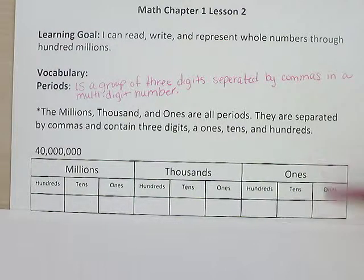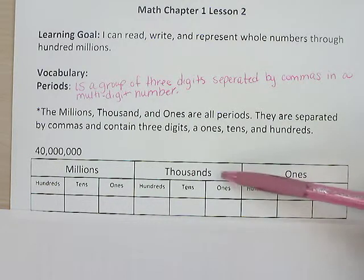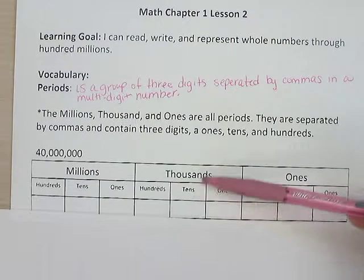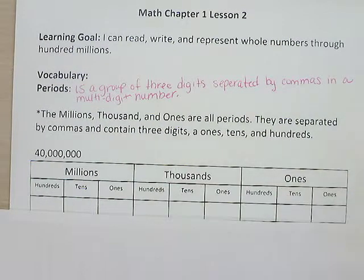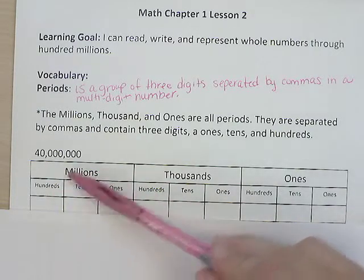So in our ones period we have our ones, tens, and hundreds. Pretty simple. In our thousands period we have one thousands, ten thousands, and hundred thousands. And in our millions we have the one millions, the ten millions, and the hundred millions.